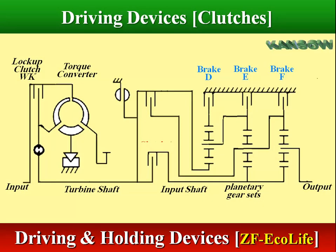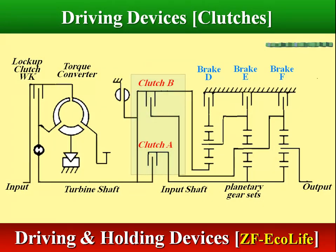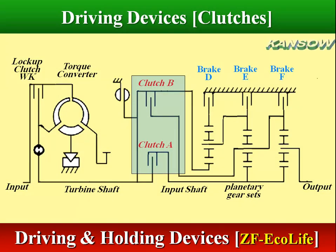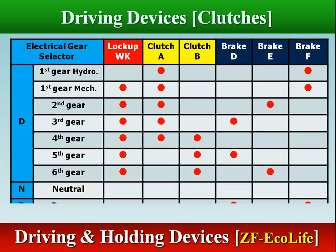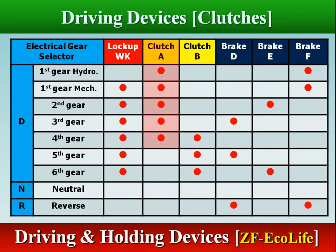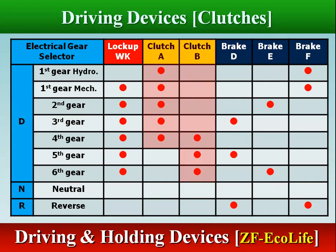In the ZFE Calife transmission, the driving devices involve two clutches installed in the clutch unit: clutch A and clutch B. Clutch A engages in reduction drive first, second, and third gear and indirect drive fourth gear, but clutch B engages in direct drive fourth gear and overdrive fifth and sixth gear.